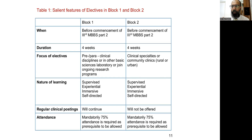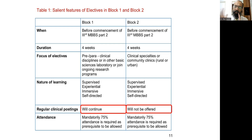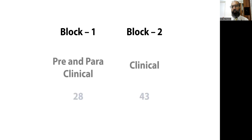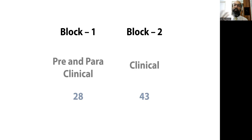This is sourced from the document from the National Medical Commission, which you can easily search. The main difference between the two is that regular clinical postings during block one will continue, which means pre and paraclinical subjects, and during clinical electives they will not be offered. At BJ Medical College, all the various departments have drafted what electives they are offering. In pre and paraclinical, there are 28 electives available to choose from, and in block two — clinical departments — all the clinical departments in total are offering 43 electives.